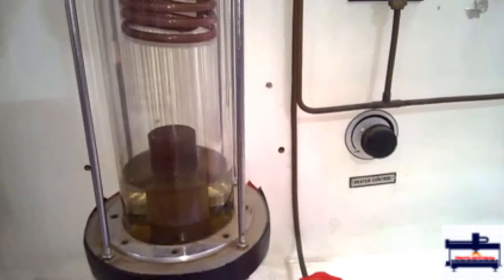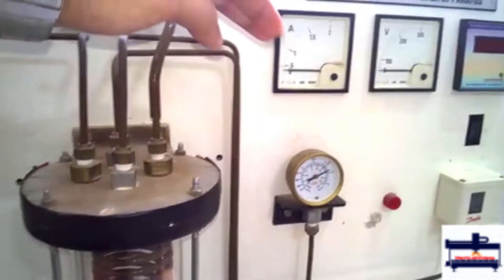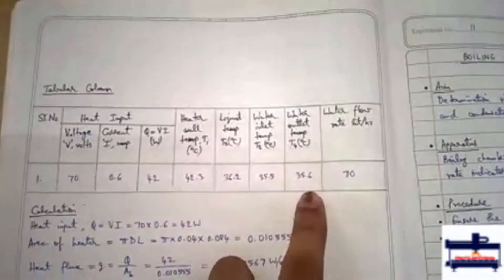The water comes in at some temperature, which is the water inlet temperature, goes through the condenser, gains some heat, and then comes out. That's how we have water inlet and water outlet temperatures.